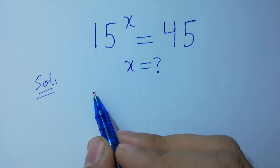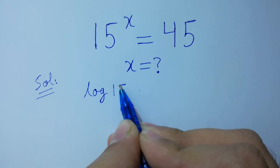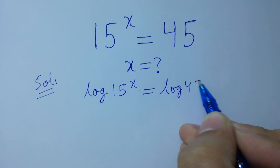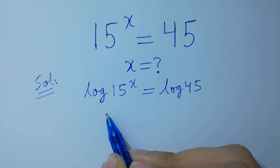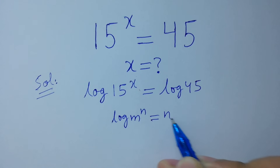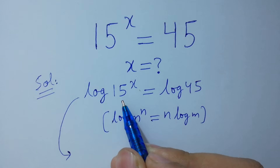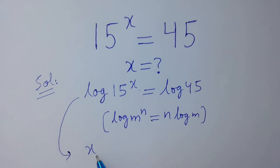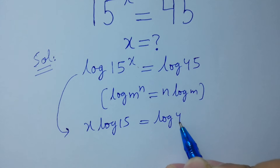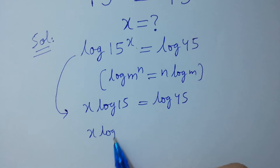First of all, take log on both sides: log 15 to the power x equals log 45. Since log m to the power n equals n log m, so we have x log 15 equals log 45. Divide on both sides by log 15.